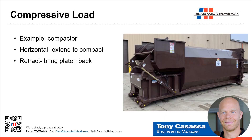Another example of a compressive load: you can't see the cylinder in this case — it's inside of this waste compactor, mounted horizontally. When it extends, it compacts the garbage or recycled material. On retract, it has very little work to do — very light force — just bringing that platen back to the home position so it can be ready to compress again. So it's still a compressive load, under load on extend, but horizontal instead of vertical.